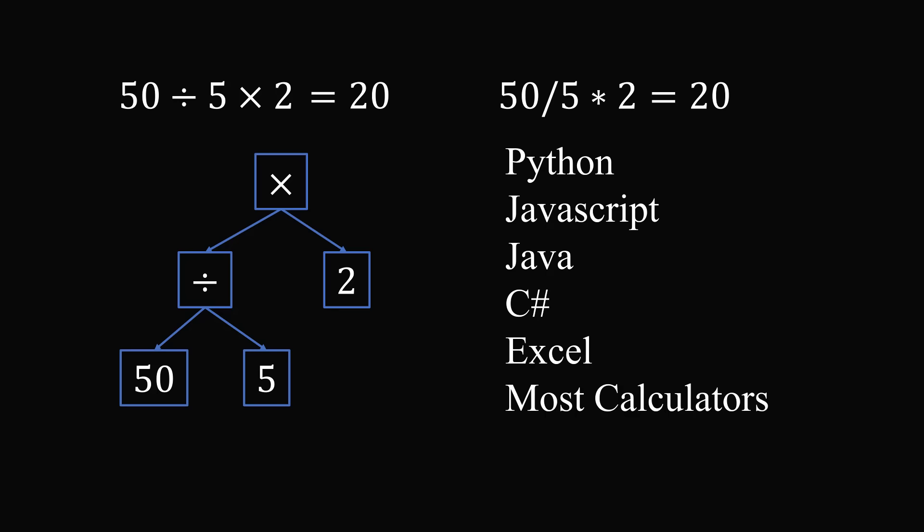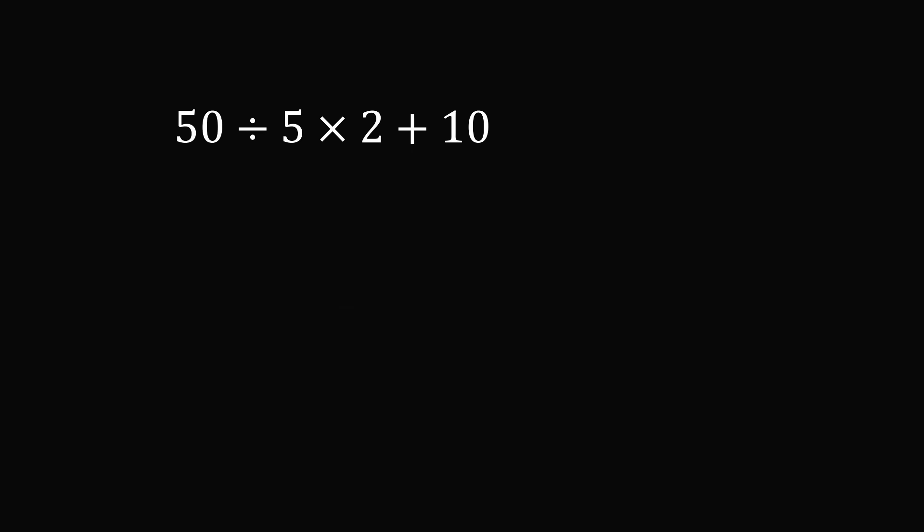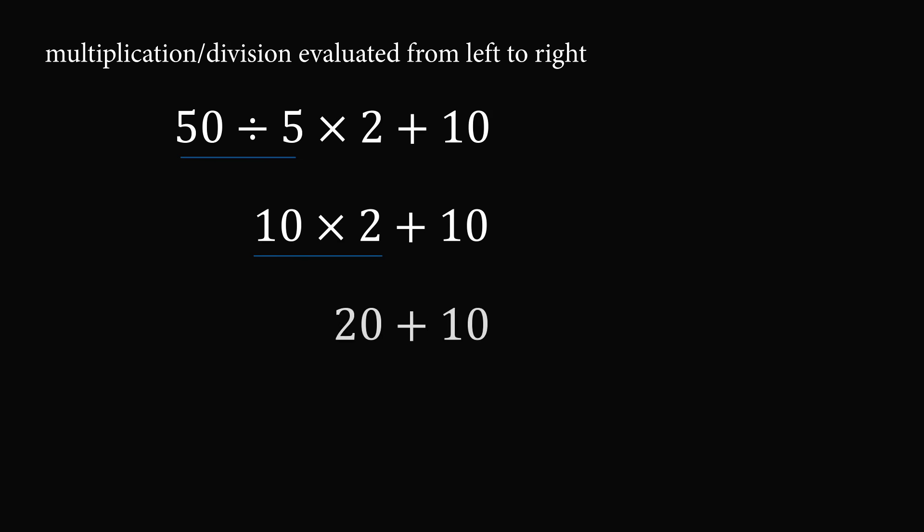So objectively, it seems there were two conventions, to do multiplication before division, or to go from left to right. It would seem that going from left to right is the rule that has won out, and nearly all calculators and computer languages adopt this rule. So if we want to evaluate this expression in the modern interpretation of the order of operations, we would take multiplication and division from left to right. 50 divided by 5 would go first to be 10. We multiply that by 2 to get 20, and 20 plus 10 is equal to 30. And that is without a doubt the correct answer according to the modern interpretation of the order of operations.